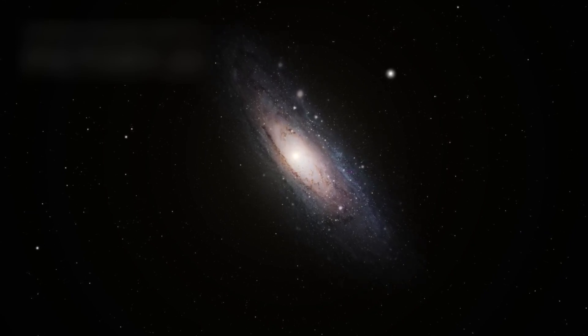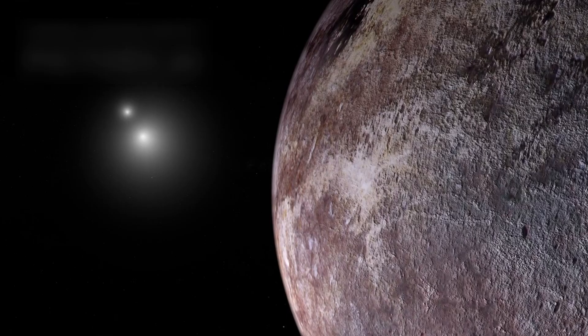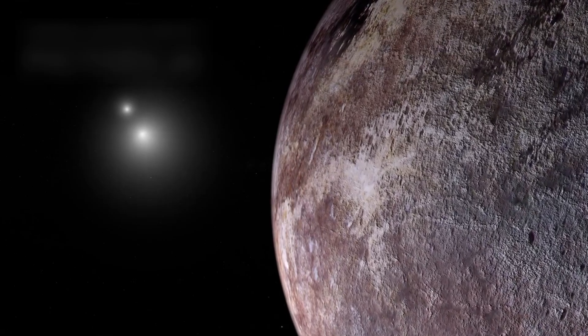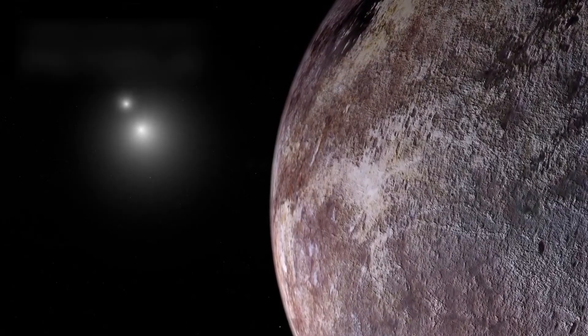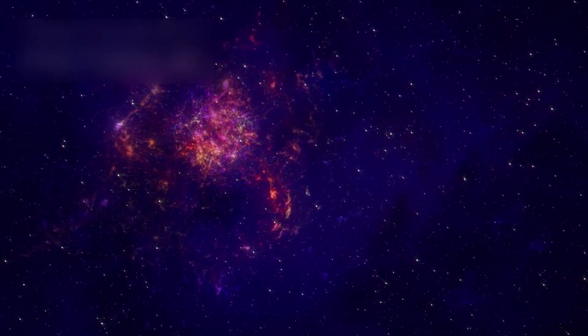And still, our solar system is just a dot compared to our Milky Way galaxy, which contains about 300 billion stars, many with their own planets. The nearest star system to us, Alpha Centauri, is 4.3 light-years away. At Voyager's current speed, it would take around 70,000 years to reach it.